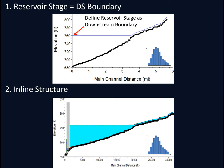That's the first method. The second method is similar but extends downstream of the structure — useful when you don't want the downstream boundary condition at the dam. Since quasi-unsteady flow can't route water through the reservoir, we'll set up an inline structure inside the dam and define an internal reservoir stage.